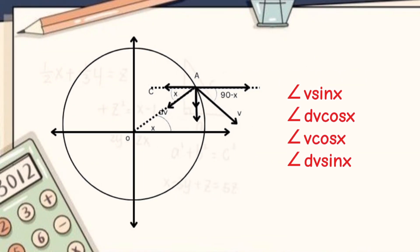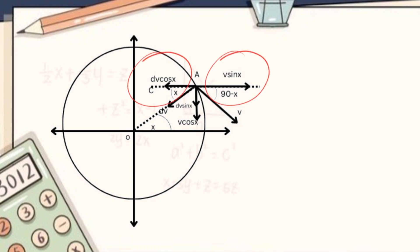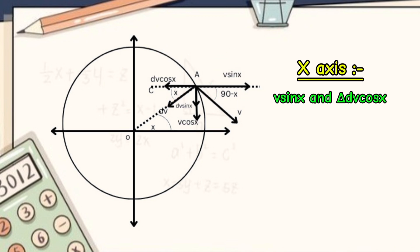Now with angles in hand, we can easily resolve velocity vectors. So the components would be as follows. Here we can clearly notice that along x-axis v sin x and delta v cos x are in opposite direction, and hence, we'll get subtracted.